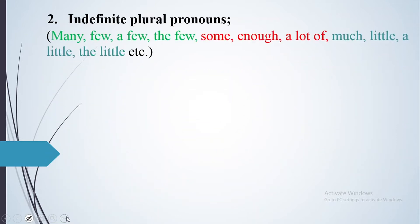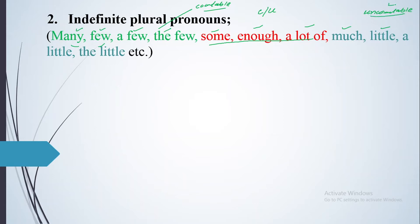The indefinite plural pronouns include: many, few, a few, the few, some, enough, a lot of — and also much, little, a little, and the little. Keep in mind: whatever is written in green is used for countable nouns. What is written in red is used for both countable and uncountable. What is written in blue is used for uncountable nouns only.